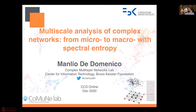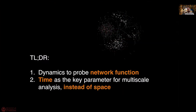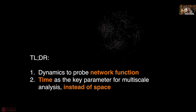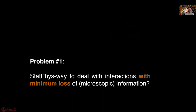We are going to talk about how we can use dynamics to probe the function of a network. The main question I'm trying to answer today is how can we use time instead of space as a key parameter for the multi-scale analysis of a complex network. To do so, we have to face a very important challenge — what I call problem one — that is about finding a way, a problem based on statistical physics, to deal with all the interactions that we have inside complex networks with the minimum loss of information.